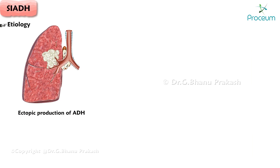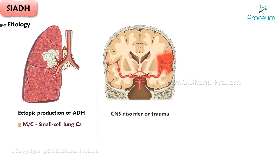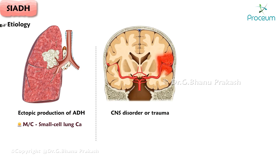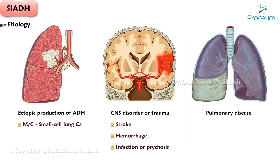Etiology. Ectopic production of antidiuretic hormone, most commonly from small cell lung carcinoma. Central nervous system disorder or trauma, such as stroke, hemorrhage, infection, or psychosis. Enhanced antidiuretic hormone release from pulmonary disease, particularly pneumonia — viral, bacterial, or tuberculous — can also lead to the syndrome of inappropriate antidiuretic hormone secretion.